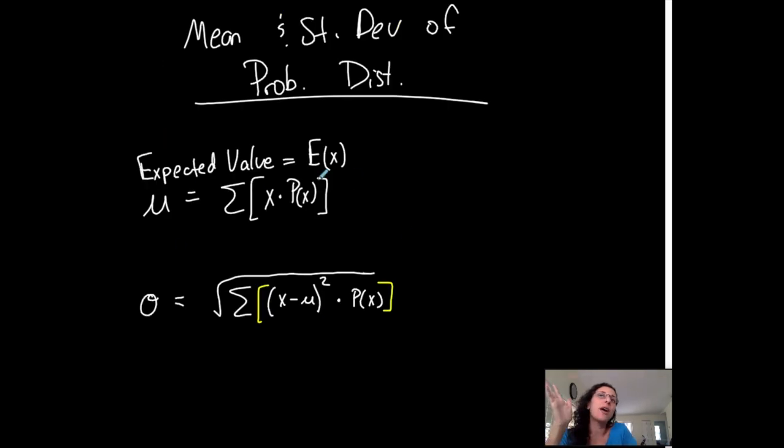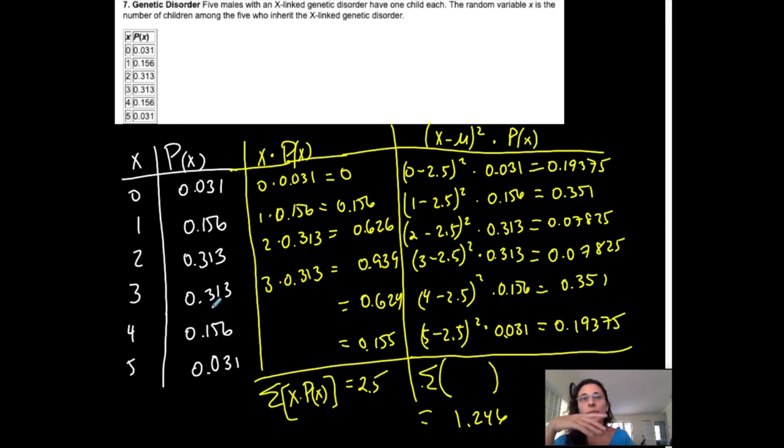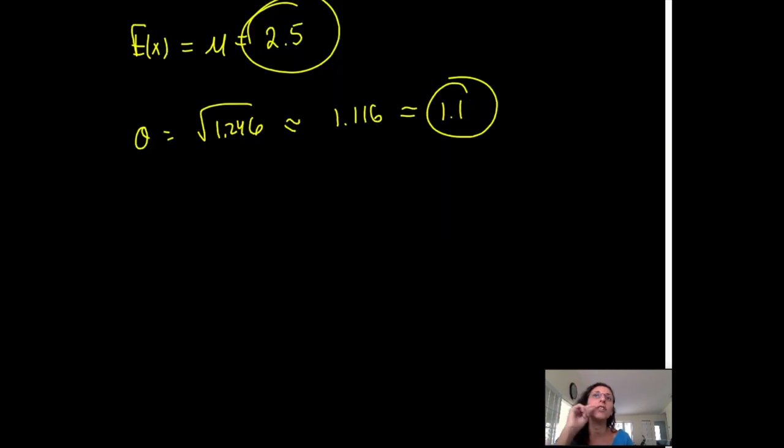So really, it's just a matter of following the formulas. Obviously, the longer, the bigger the table, the more tedious, the worse. This one could be worse. But that's how you find your expected value, or your average, or your mean, and your standard deviation from a probability distribution.